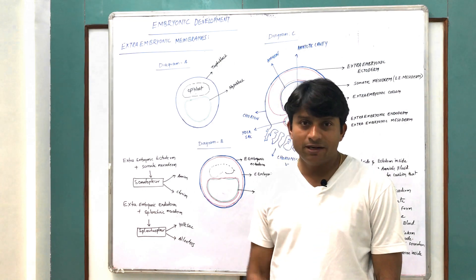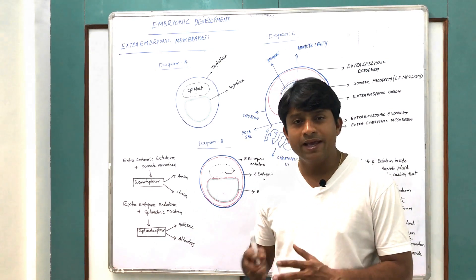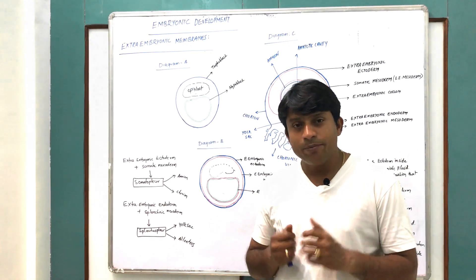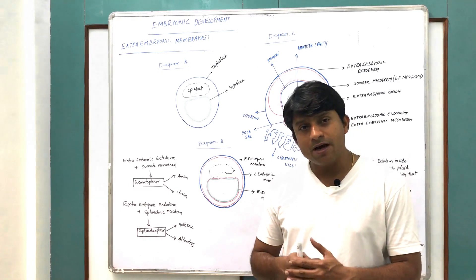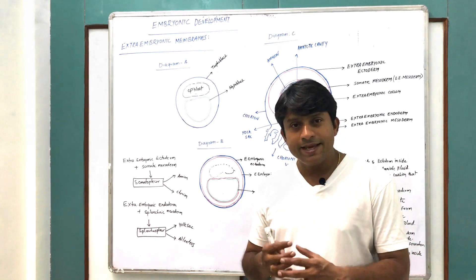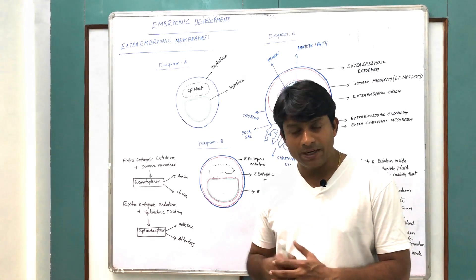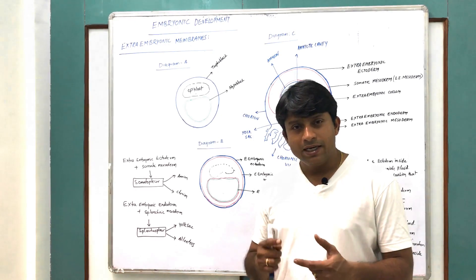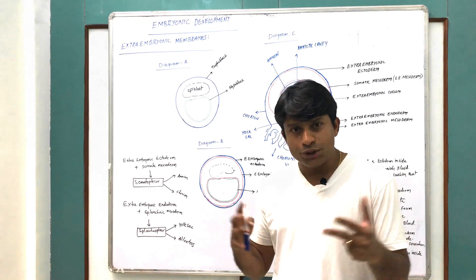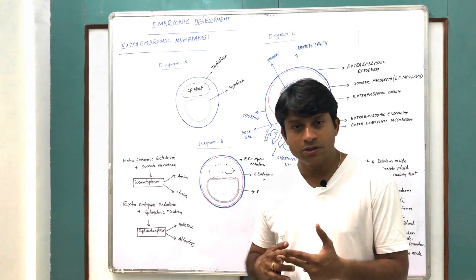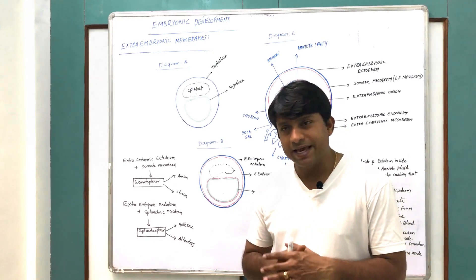In embryonic development, the formation of extra-embryonic layers takes place. These extra-embryonic layers are originated from the embryo but are not a part of the embryo. These extra-embryonic membranes assist the embryo in development and are useful for preventing desiccation of the embryo, acting as a cushion to absorb shocks, transfer of nutrients, and exchange of gases.